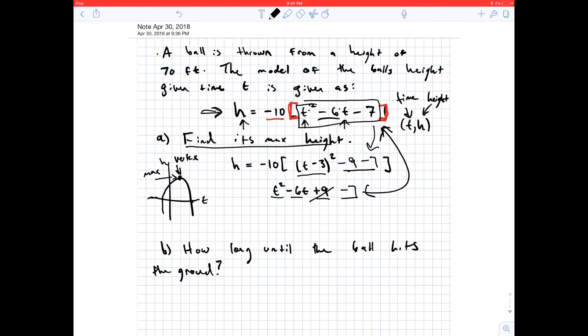So all together, we have h equals, focusing on this one now, h equals negative 10 times t minus 3 squared. And then negative 9 minus 7 is going to give me negative 16. And so now all we need to do is multiply in this negative 10. It'll go in front of that squared term.